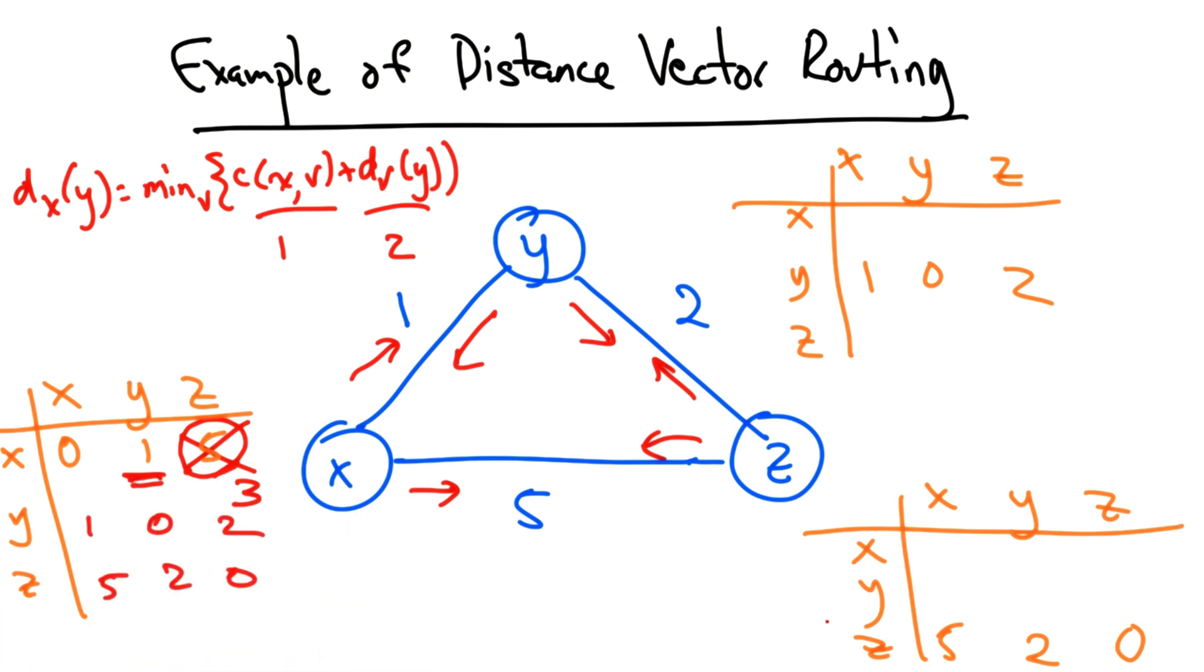Similarly, x will receive a distance vector from z: 5, 2, 0. But of course, when it uses the Bellman-Ford equation to update its distances, again, the distance between z and x will be updated from 5 to 3.